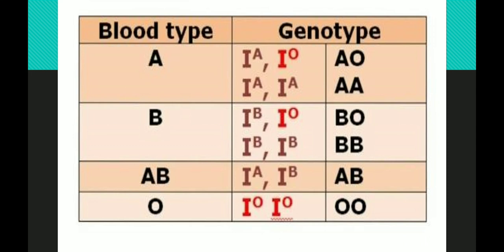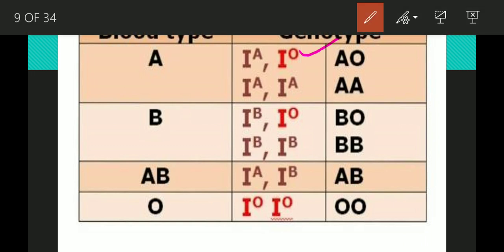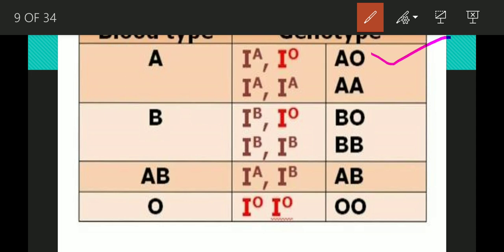What is the genotype for blood type A? The genotypes are IAIA or IAI0. Since A and B are equally dominant and O is the recessive character, blood type A can be either homozygous IAIA or heterozygous IAI0. Similarly, blood type B has genotypes IBIB or IBI0. If both parents carry IA and IB alleles, their children can have AB blood group.